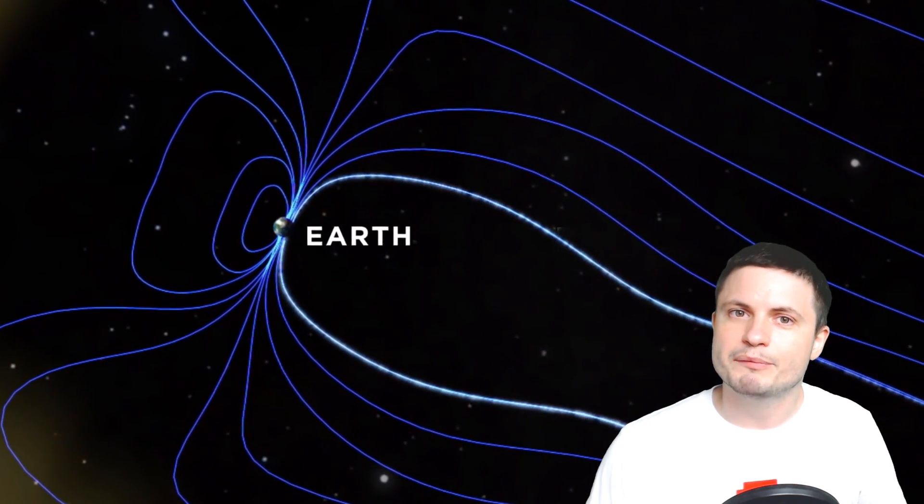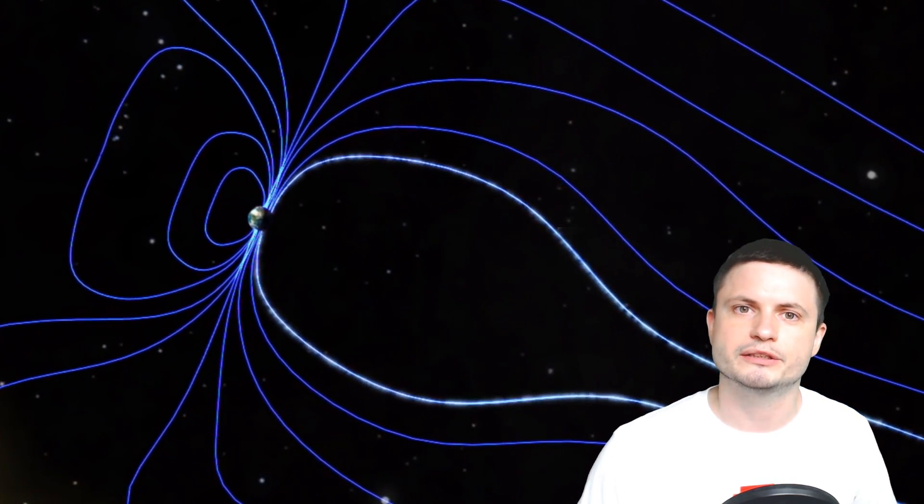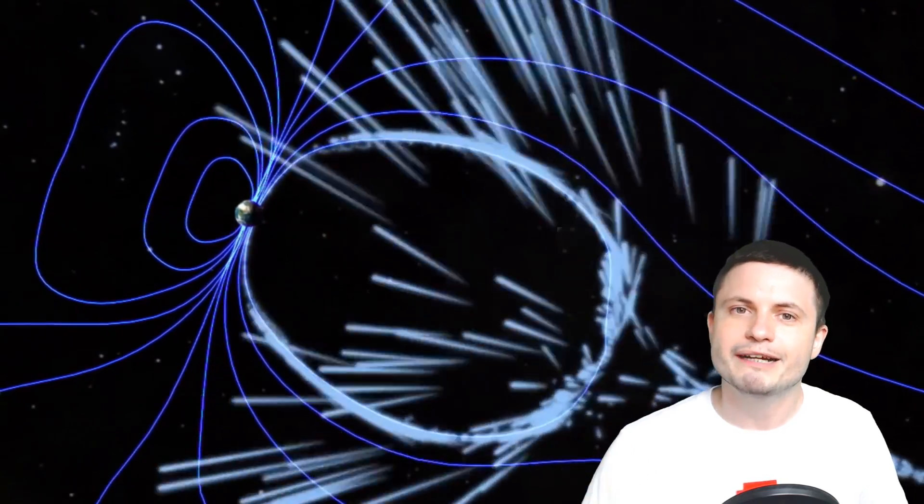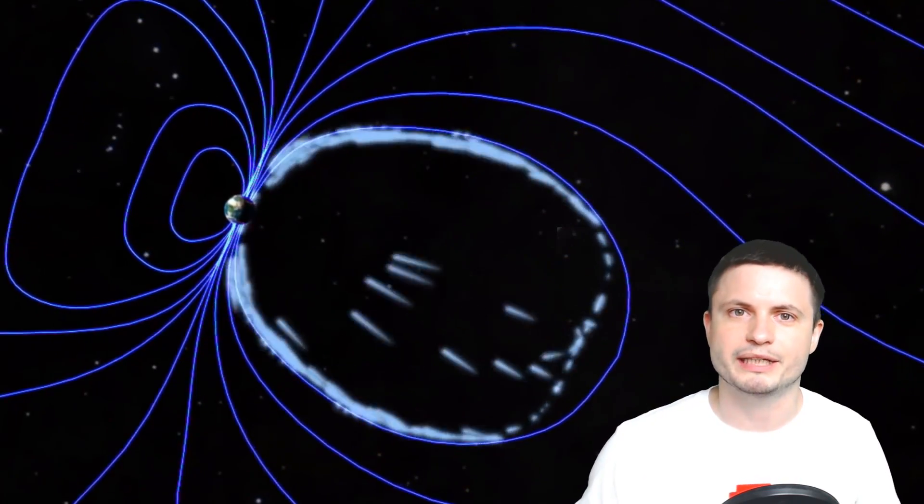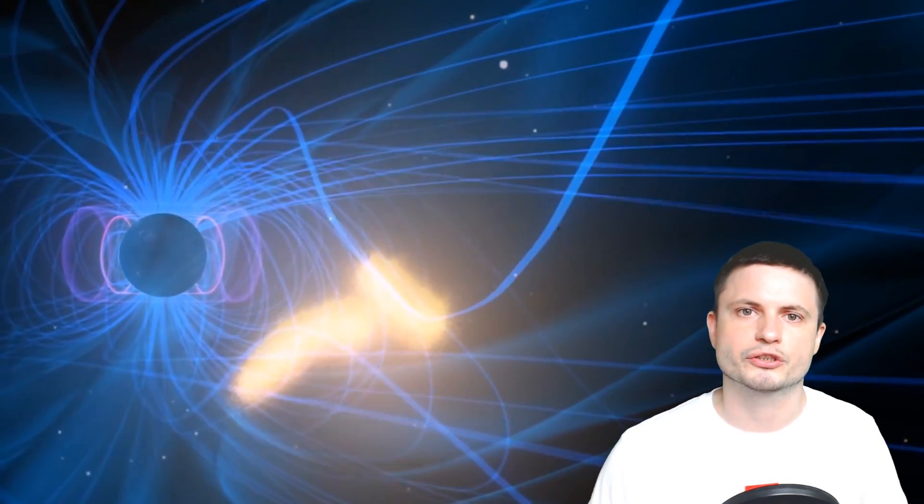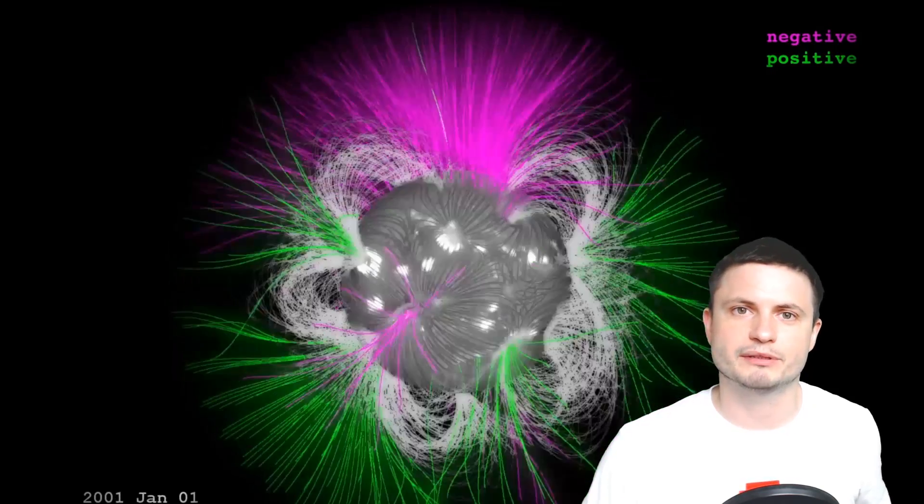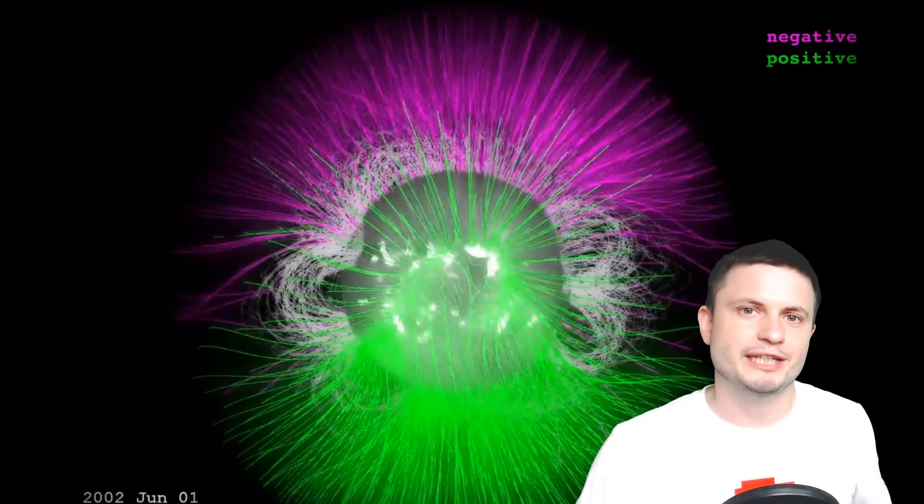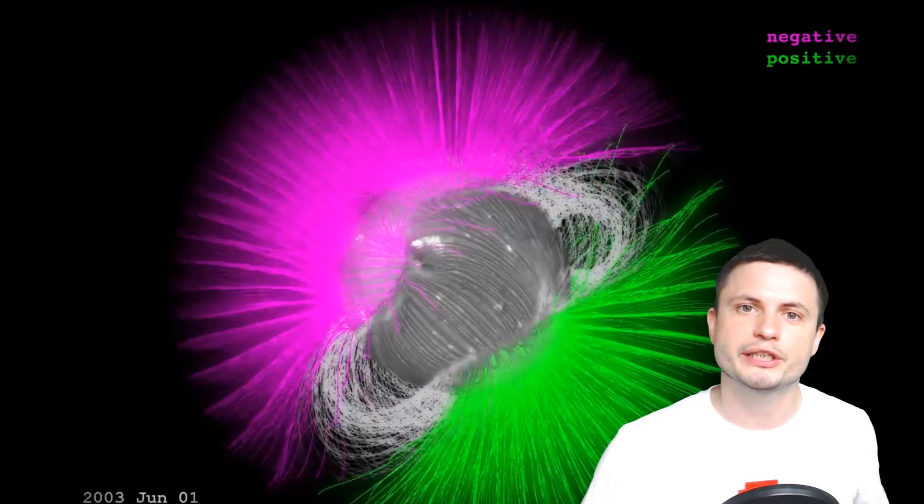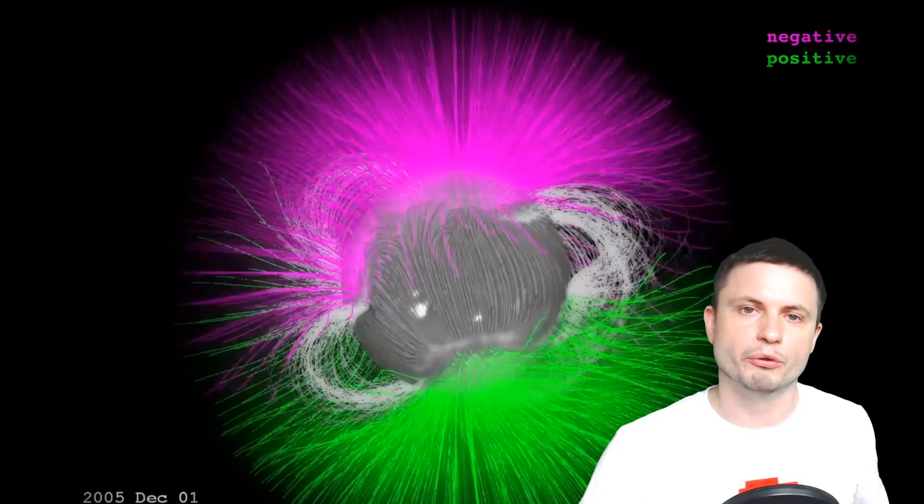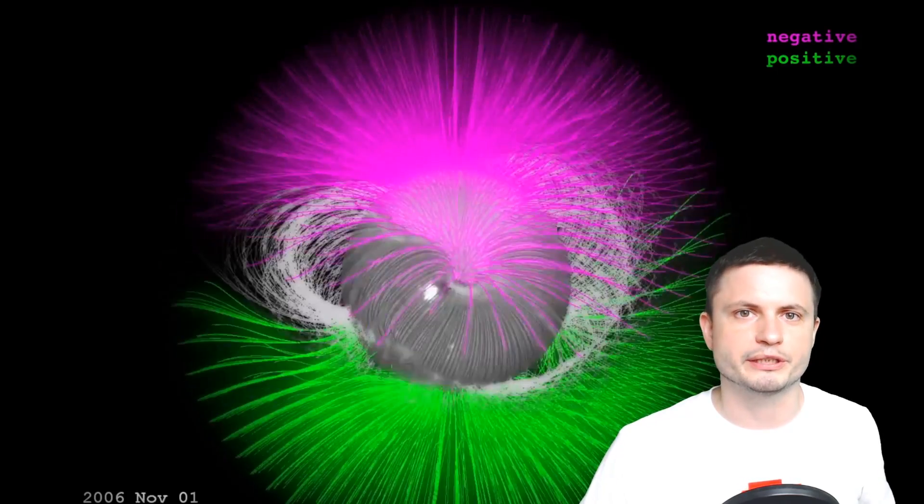But at the same time, scientists that studied this in a lot of detail realized that something else might be happening here that is not a magnetic flip: something known as the magnetic excursion. This is a kind of event that actually did occur many times. During these excursions, instead of the actual flip of north and south, the field kind of starts wobbling a lot, becomes very chaotic, and for about anywhere from a few hundred to a thousand years acts very strange. And then comes back to what it used to be, with north pointing at the north, south pointing at the south.